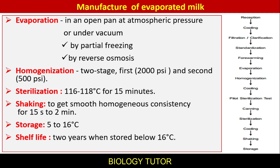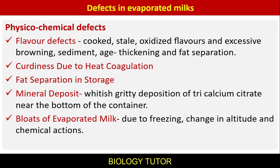The manufacturing process of evaporated milk: reception, cooling, filtration and clarification, standardization, warming, evaporation, homogenization, cooling, pilot sterilization tests, canning, sterilization, cooling, shaking, and storage below 16 degrees Celsius. Defects in evaporated milk — physicochemical defects include flavor defects such as cooked, stale, and oxidized flavors, excessive browning, sediment, age thickening, and fat separation.